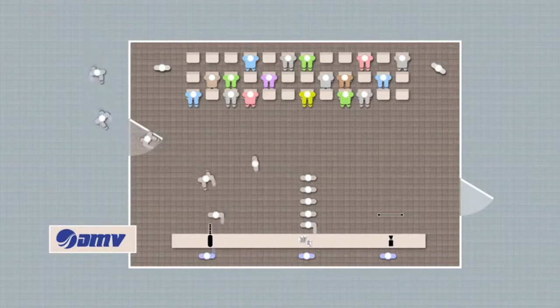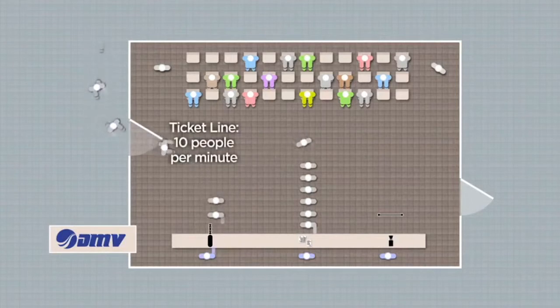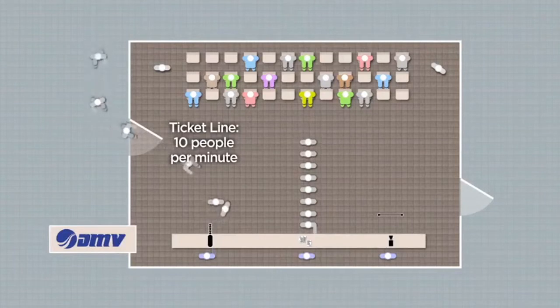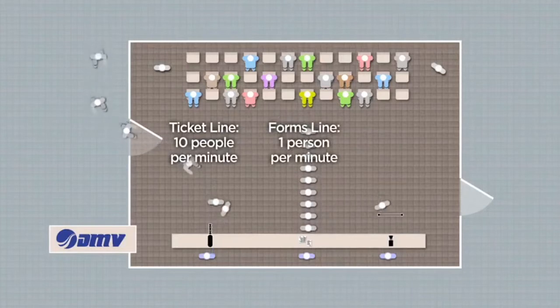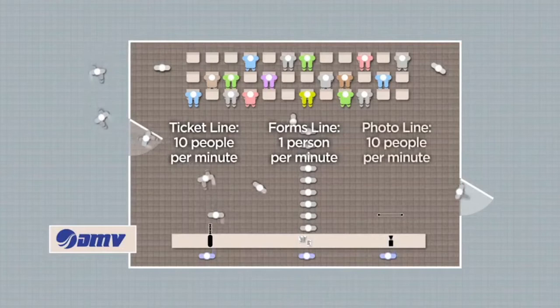Now taking a ticket is a pretty simple process. Let's say that 10 people a minute can get a ticket. Next is the painful part, dealing with the form submission at line two. One person per minute if you're lucky. Finally comes the queue for your photo. Imagine that your cameraman is a pro and can get 10 people per minute through that line.